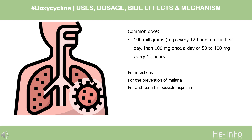For oral dosage forms (capsules, suspension, syrup, tablets) for infections: Adults take 100 mg every 12 hours on the first day, then 100 mg once a day or 50–100 mg every 12 hours. Children 8 years of age or older weighing 45 kg or more follow the same adult schedule. Children 8 years or older weighing less than 45 kg: dose is based on body weight and determined by the doctor — usually 4.4 mg per kg per day divided into 2 doses on day one, followed by 2.2 mg per kg per day taken as a single dose or divided into 2 doses on following days.